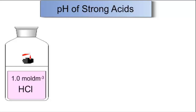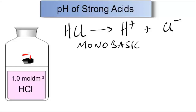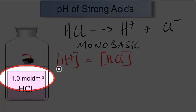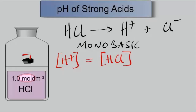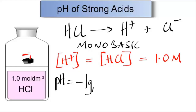Let's consider how to calculate the pH of a strong acid. HCl, hydrochloric acid, is described as a strong monobasic acid. That's because one mole of the acid produces one mole of hydrogen ions. If the concentration of the acid is one molar, the concentration of the hydrogen ions will be the same.